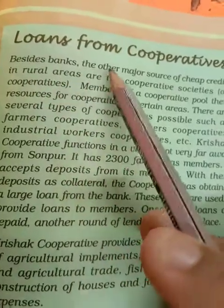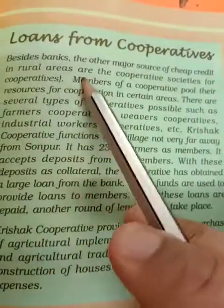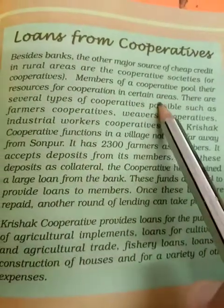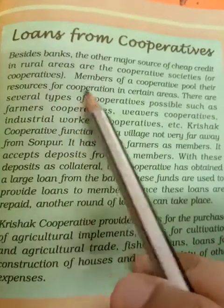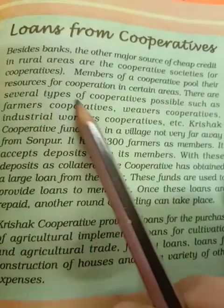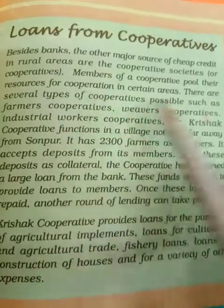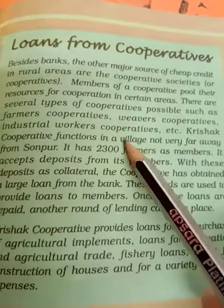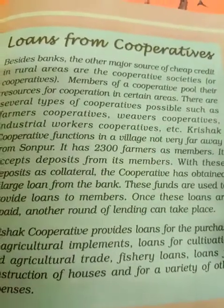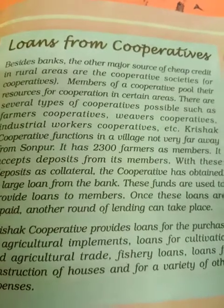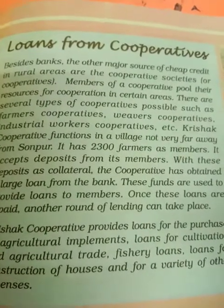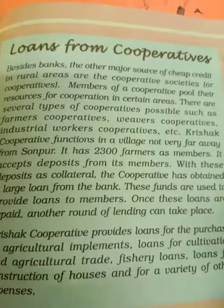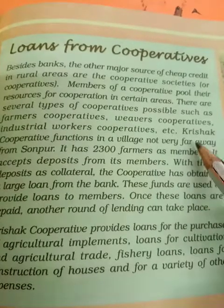Besides banks, the other major source of cheap credit in rural areas are the cooperative societies. Members of cooperatives pool their resources for cooperation in certain areas. There are several types of cooperatives — farmers cooperatives, weavers cooperatives, industrial workers cooperatives, etc. They collect savings from each member, pool that money into a large amount, and then give loans to each other.